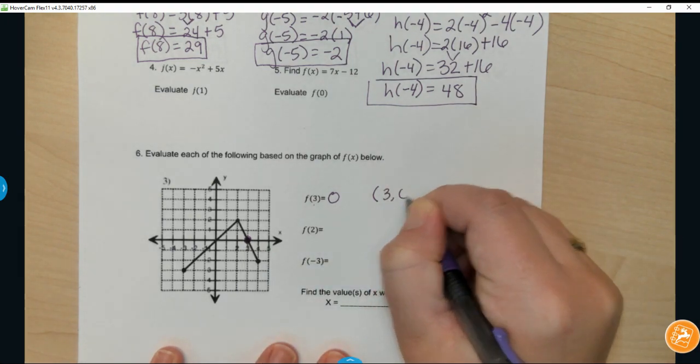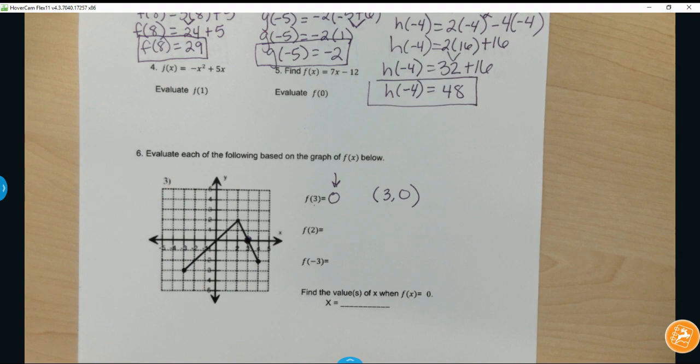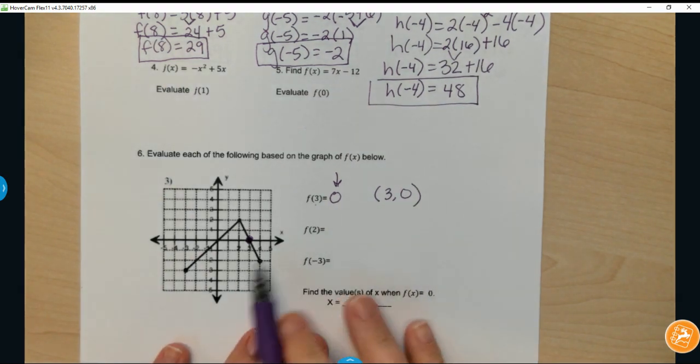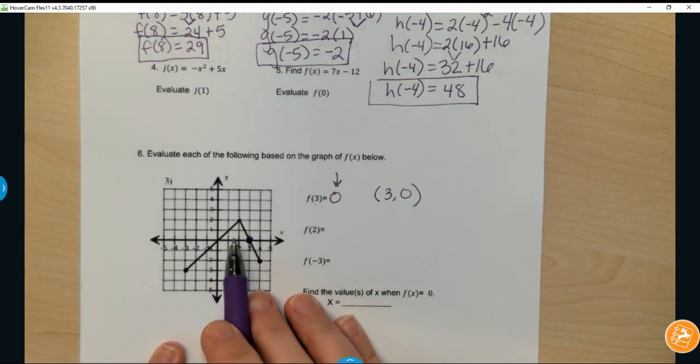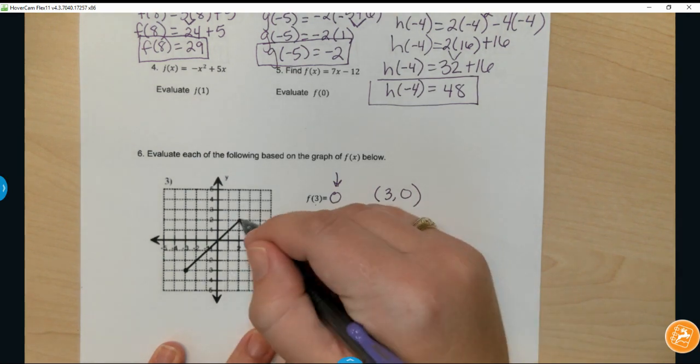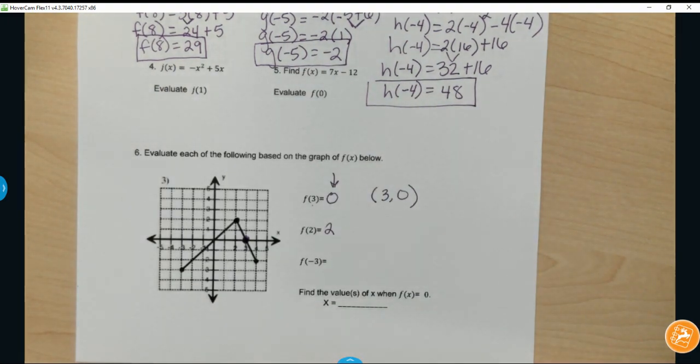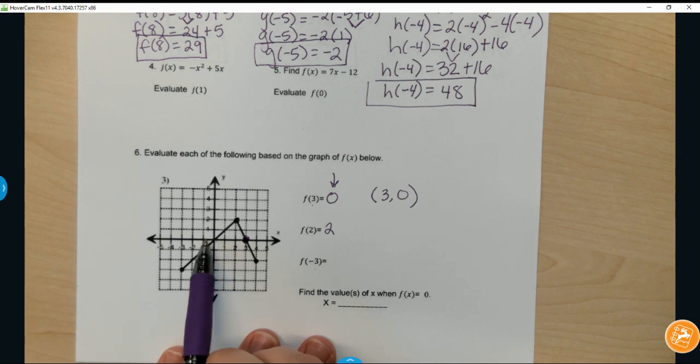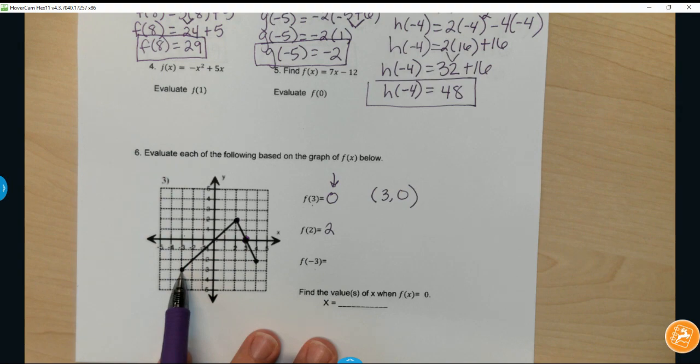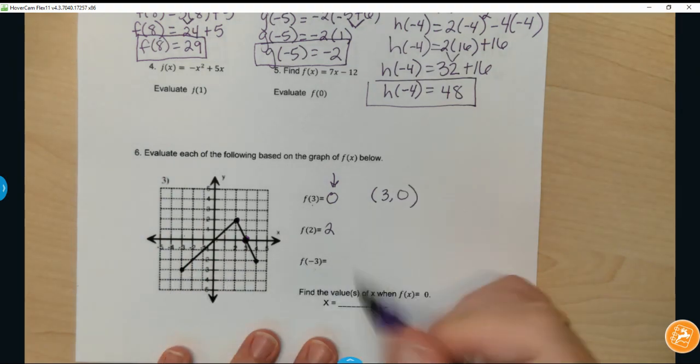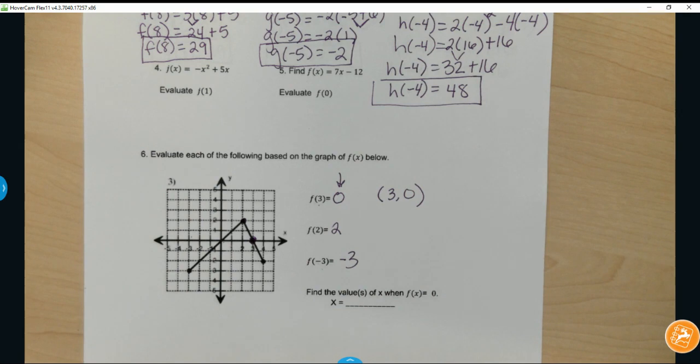f(2): go over 1, go over 2, and then find the point that is located on the graph, which looks like it's at (2, 2). So f(2) equals 2. f(-3): when x is negative 3, back 1, back 2, back 3, and then I'm going to go down to see that point right there, that also looks like it's at negative 3. So f(-3) equals negative 3.